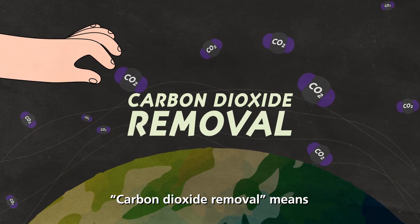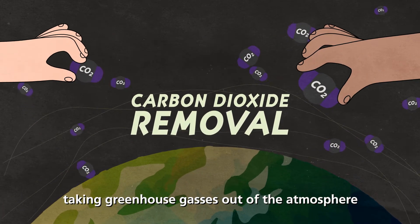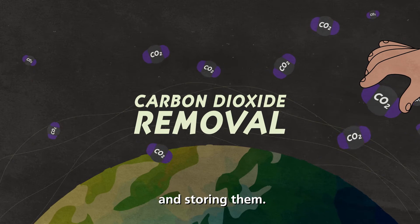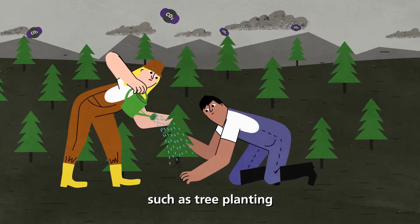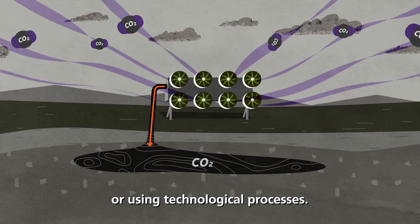Carbon dioxide removal means taking greenhouse gases out of the atmosphere and storing them. This can be done through natural processes such as tree planting or using technological processes.